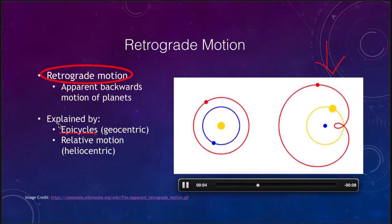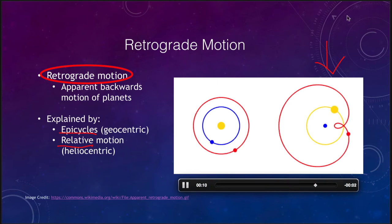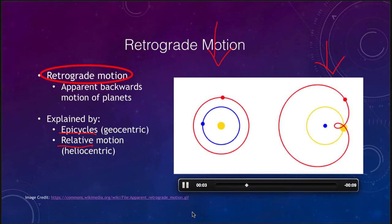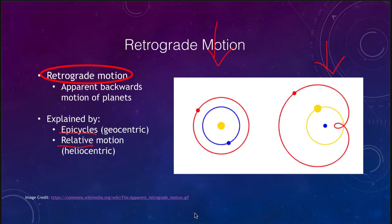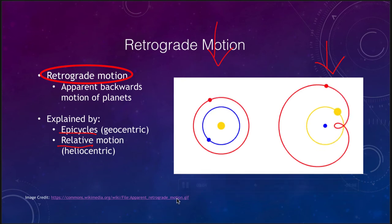In terms of the heliocentric universe, shown on the left hand side, retrograde motion occurs when one planet passes the other. You have the Sun in yellow, the Earth in blue, and Mars in red. As the Earth comes up and passes Mars, it will make Mars appear to go backwards relative to the more distant stars. So it is an apparent motion, but both models can explain retrograde motion.